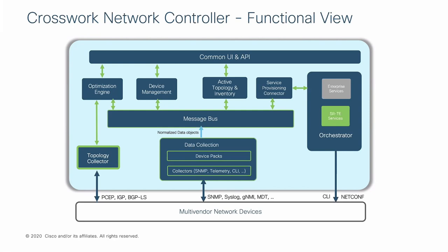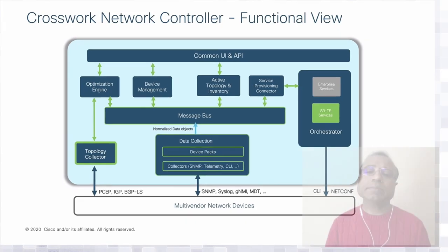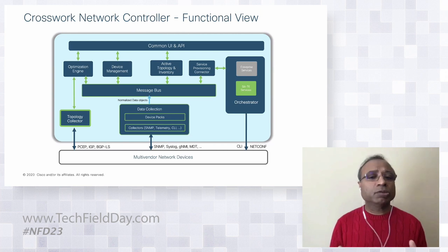The optimization engine leverages SRPCE for path computation, which in turn uses protocols like BGP-LS or IGP for gathering network state and topology. For dynamic path management, it uses PCEP. The data gateway is the common collector, implementing many different protocols to collect data from multi-vendor network devices. All interfaces in the solution are standards-based, which helps support multi-vendor devices and eases integration with northbound applications or other OSS systems. This gives a quick glimpse into the network controller.